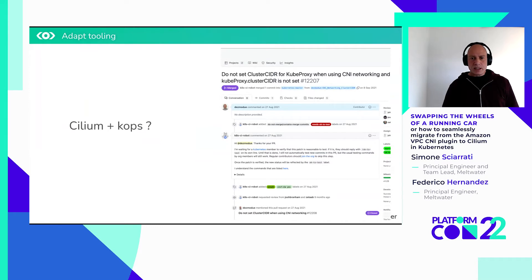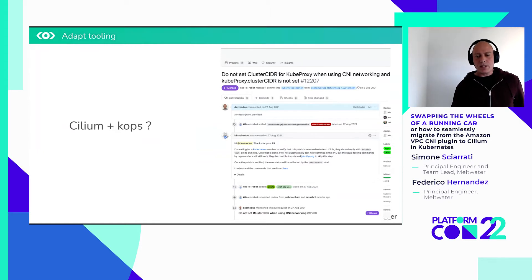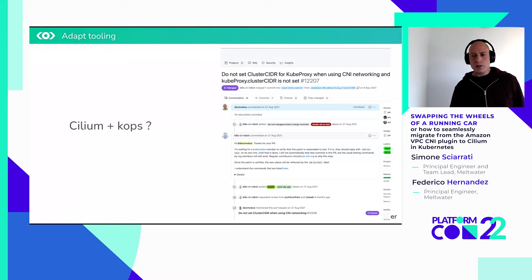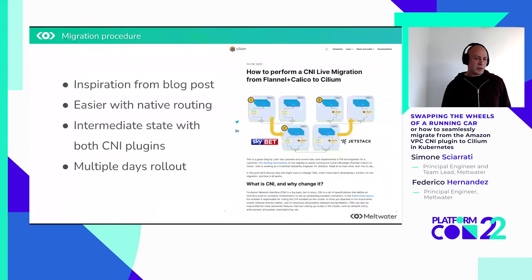Once we were satisfied with that, we looked at how we could combine Cilium with KOPS. We decided not to manage Cilium with KOPS itself — KOPS has the ability to manage the manifests for Cilium, but we decided to opt out. In order to do so, we had to make a small change to KOPS so that we could manage Cilium separately. And with that, I will hand over to Federico.